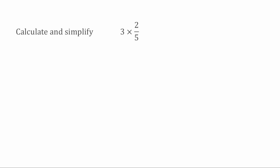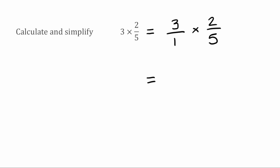We can also have questions where we're multiplying a whole number by a fraction. We can easily turn these back into questions like the ones we've just looked at by turning our whole number into a fraction. So we could turn 3 into a fraction by putting 3 as the numerator and then putting it over 1. So we've now got 3 over 1 multiplied by 2 over 5. There's no highest common factor greater than 1 in 1 and 2, nor in 3 and 5, so we can't cancel these down. So we simply multiply: 3 times 2 gives us 6, and 1 times 5 gives us 5. So our answer here would be 6 over 5.